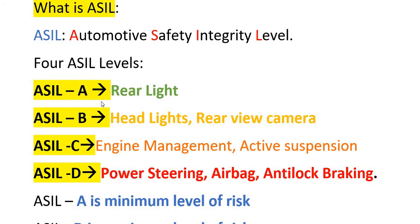Applying these ASIL levels to car components, examples are: ASIL A applies to rear lights; ASIL B applies to headlights or rear view camera; ASIL C applies to engine management or active suspension; and ASIL D applies to power steering, airbags, or anti-lock braking systems.